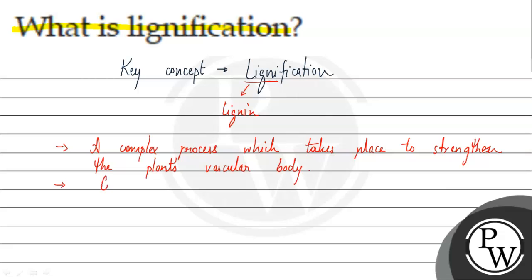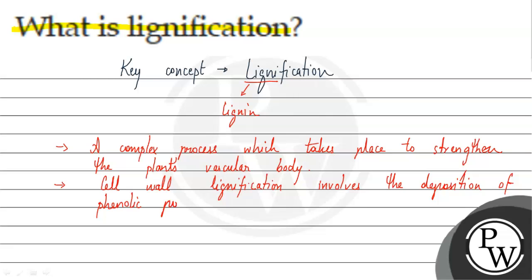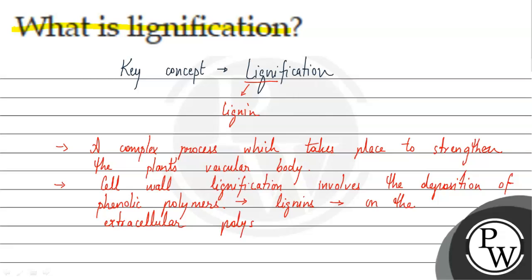This cell wall lignification involves the deposition of phenolic polymers. So, this process में क्या होता है कि phenolic polymers जो ill-defined होते हैं, बहुत well-defined नहीं होते हैं, वो deposit हो जाते हैं on the extracellular polysaccharide matrix. These phenolic polymers are lignins and they accumulate on the extracellular polysaccharide matrix.